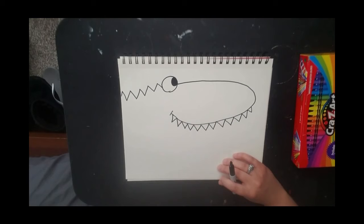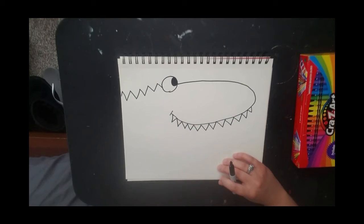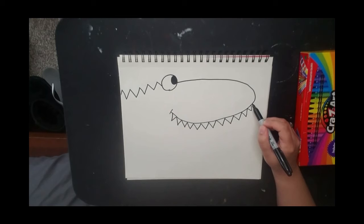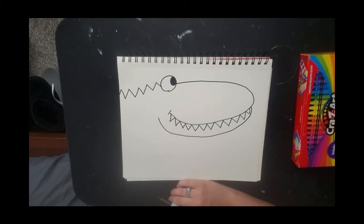Once I have his cool looking crocodile teeth, I'm going to put my point right at the tip of his teeth or right at the tip of his nose and I'm going to put another smaller curve underneath for his jaw.